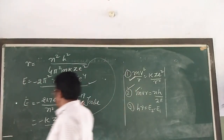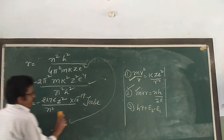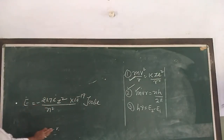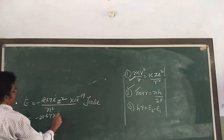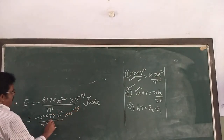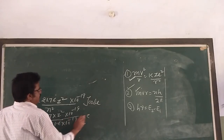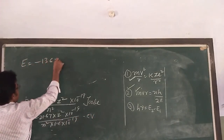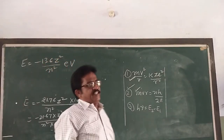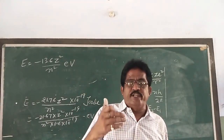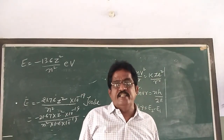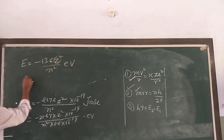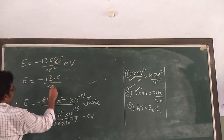Remember this value. If you want to convert from joules to electron volts, divide by 1.6×10⁻¹⁹. Then E = −13.6 × z²/n² eV. For hydrogen, z = 1, so E = −13.6/n² eV.